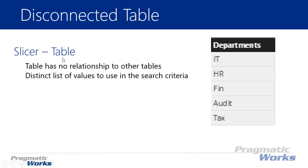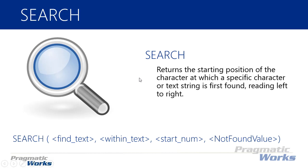So this is what it's going to look like. We'll create a slicer table with departments IT, HR, Finance, Audit, and Tax — simply a distinct list of values, with no relationship to the original table. We'll use a calculated measure with the SEARCH function. The SEARCH function returns the starting position of the character at which a specific text string is found. For example, if I was searching my last name 'Pearson' for 'EAR', it would return position two because EAR starts at the second character. We'll use this inside an IF statement: if the value is greater than zero, we know it was found somewhere in the text string; if it equals zero, it was not found.